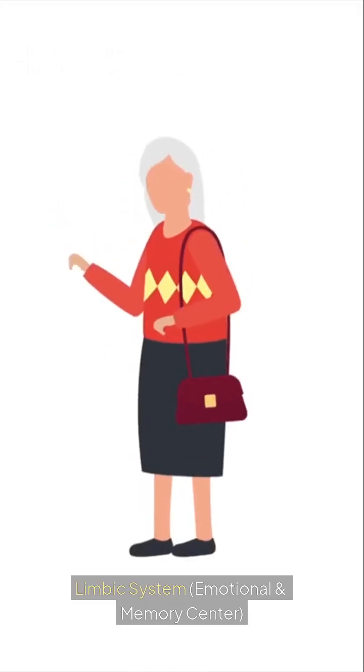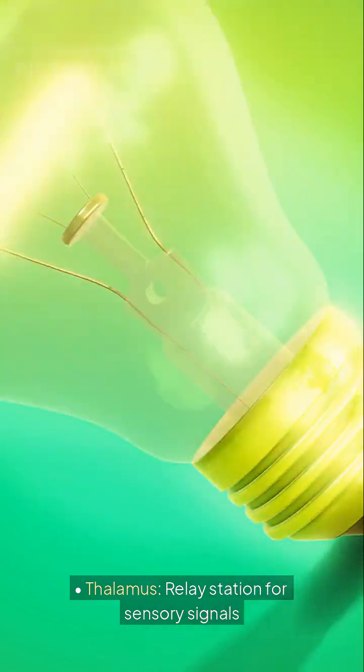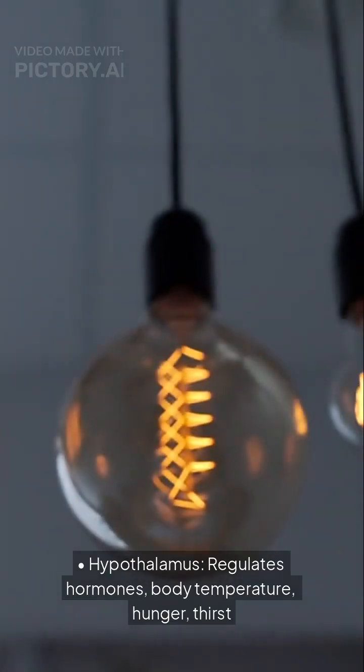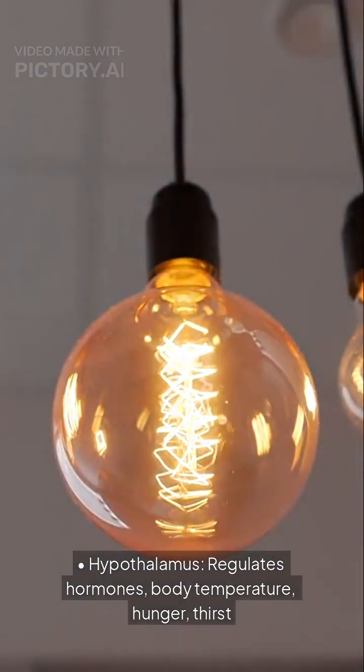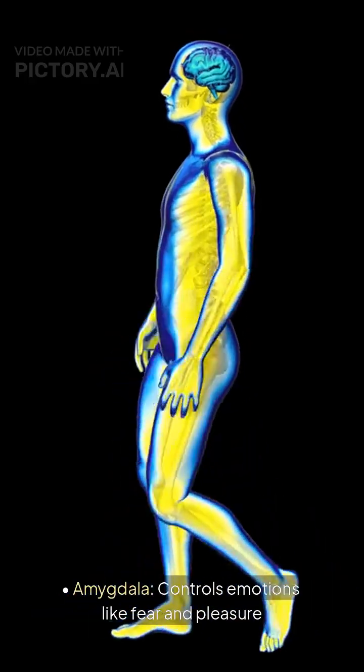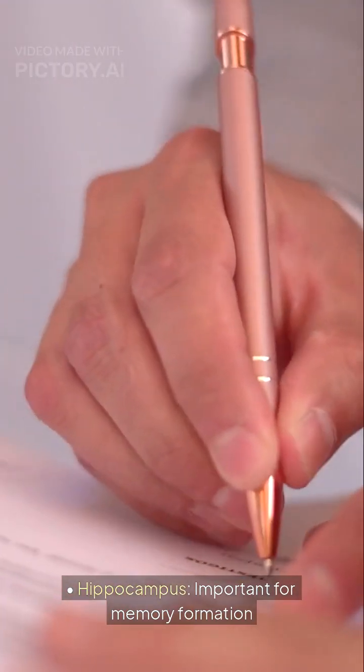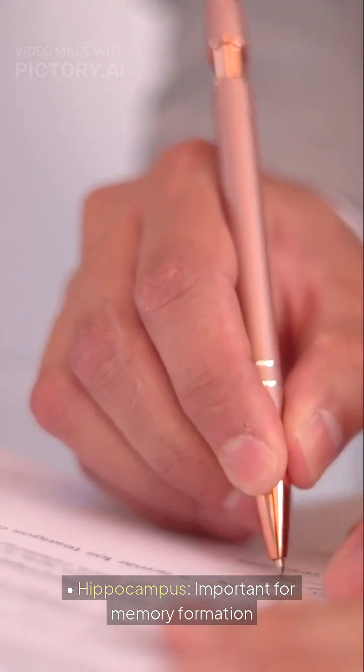The limbic system is the emotional and memory center. The thalamus is a relay station for sensory signals. The hypothalamus regulates hormones, body temperature, hunger, and thirst. The amygdala controls emotions like fear and pleasure. The hippocampus is important for memory formation.